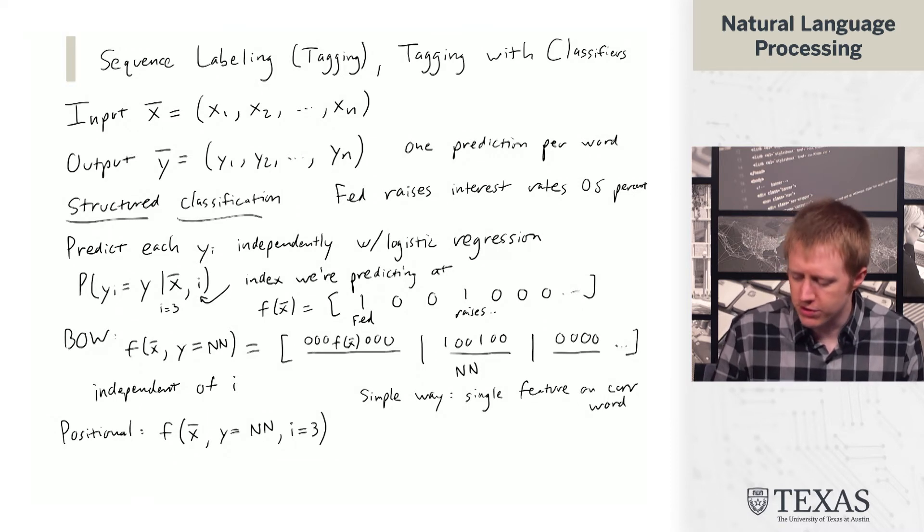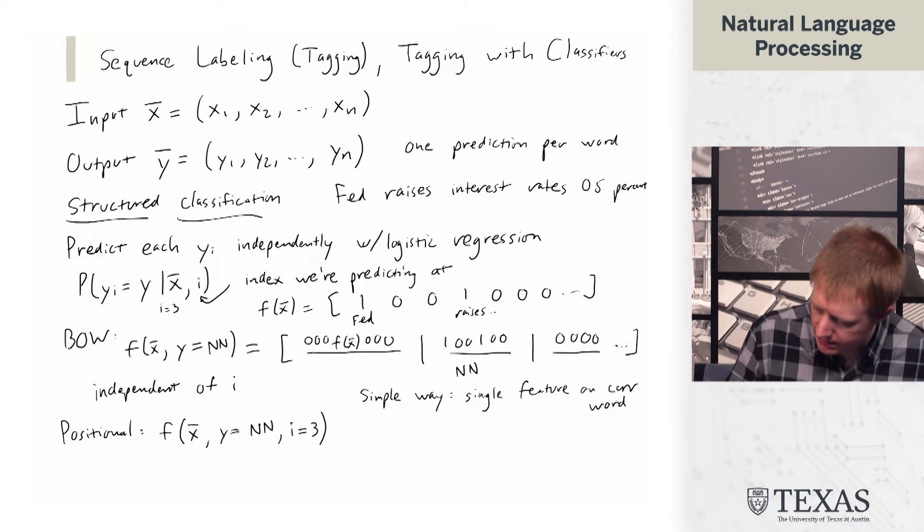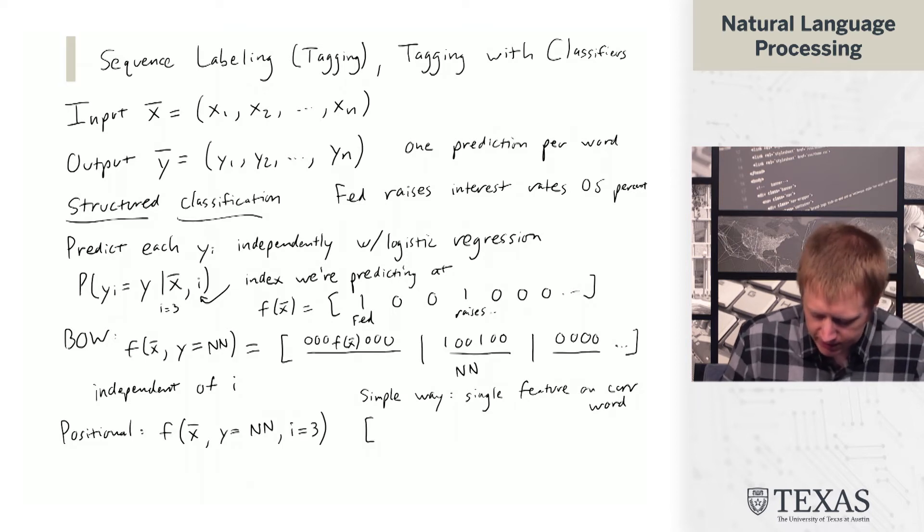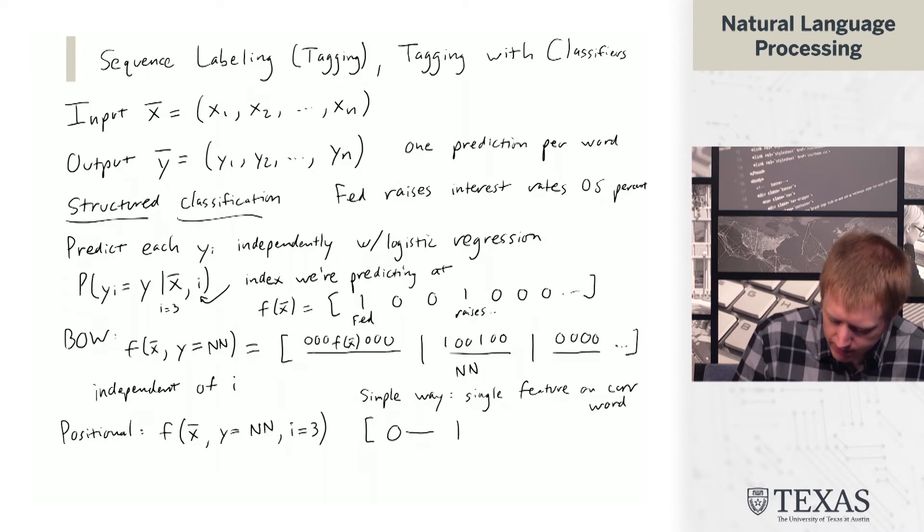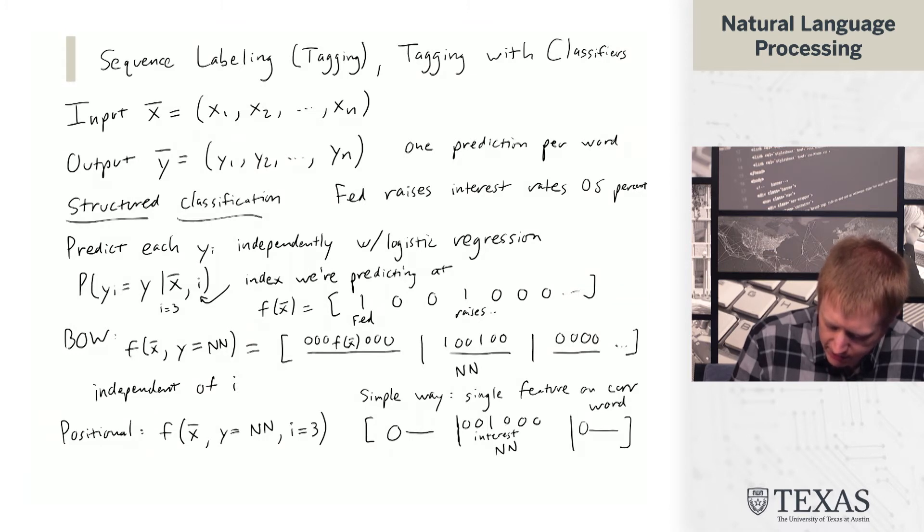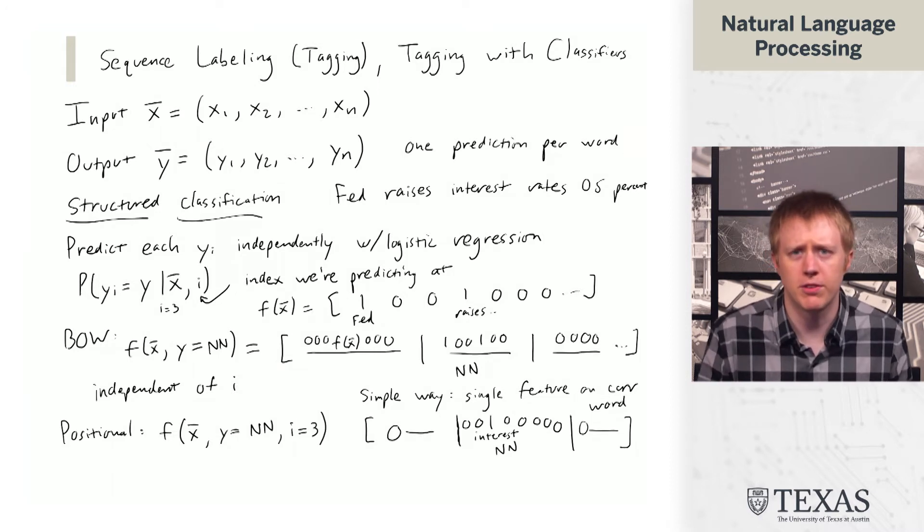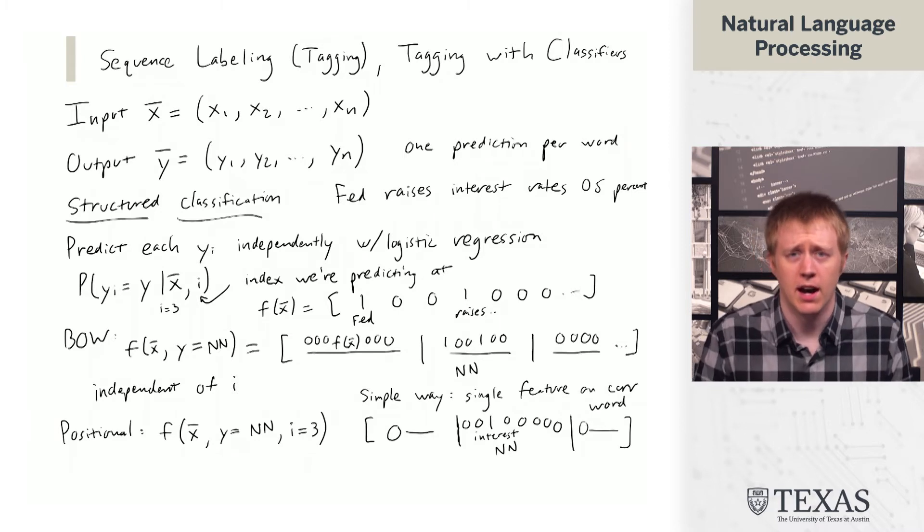So when I say a single feature on the current word, what I mean is that we're going to have a vector where we're going to have all zeros except in this nn segment. And we're just going to have a one associated with interest. And everything else is going to be zeros. So basically what we've done is we've taken our bag of words and sort of masked it out. We've said, okay, we're only going to look at the current word.